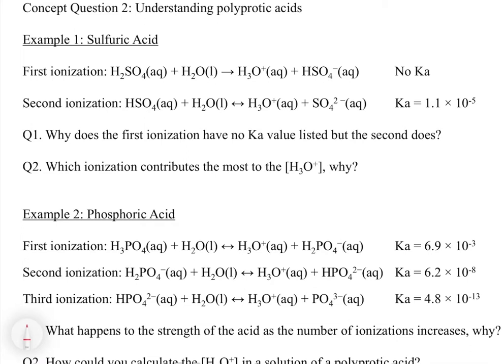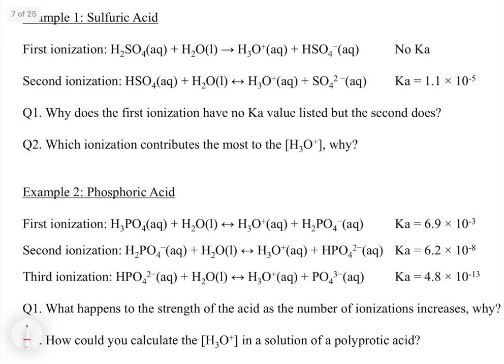Let's take a look at this concept question and the first example, which is sulfuric acid. The first ionization of sulfuric acid is H2SO4 plus H2O gives H3O+ plus HSO4-. There's no Ka associated with that. Then the second one is HSO4- plus H2O goes to H3O+ plus SO4 2-. So why does the first ionization have no Ka listed, but the second one does?